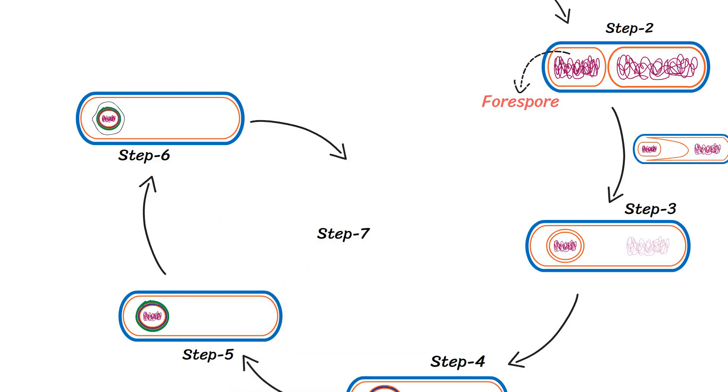Finally, in step 7, the spore gets released when the vegetative cell is degraded.